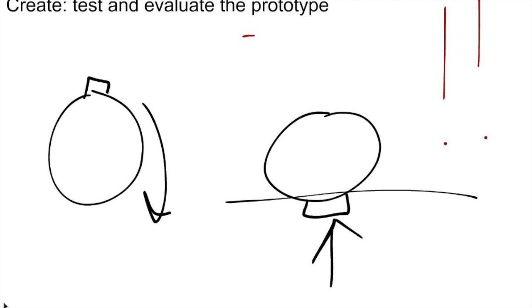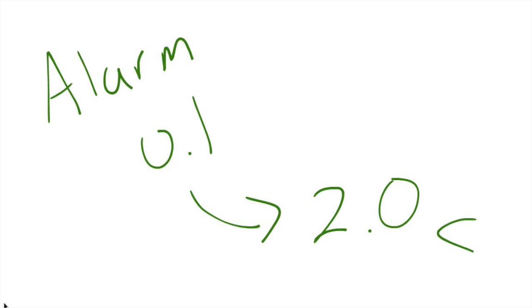Now we're ready to make a ton of money. That is what we like to call alarm 0.1. Because eventually we're going to want to make this better through this process and have the 2.0 version and make even more money. So hopefully this helped you with the engineering design process.